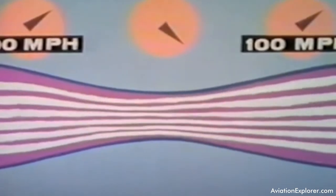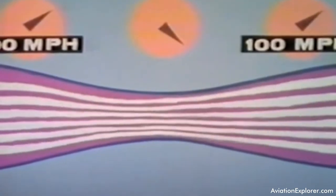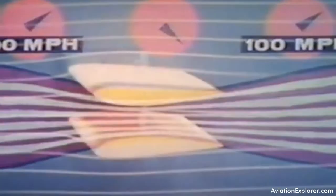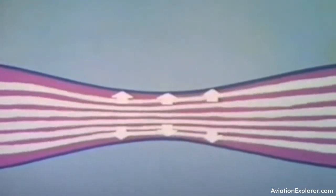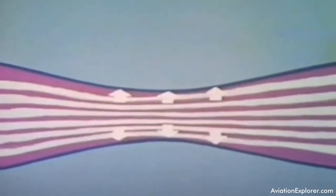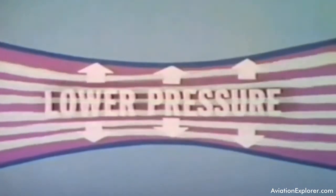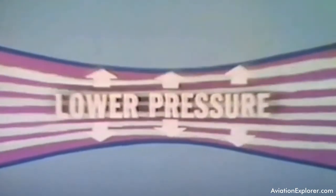But the interesting thing is that in order for the air to go at the faster speed through the narrow part, something has to balance this change in velocity, this speed difference. What changes is the air pressure in the narrow part. This pressure is significantly lower than the pressure at either end.